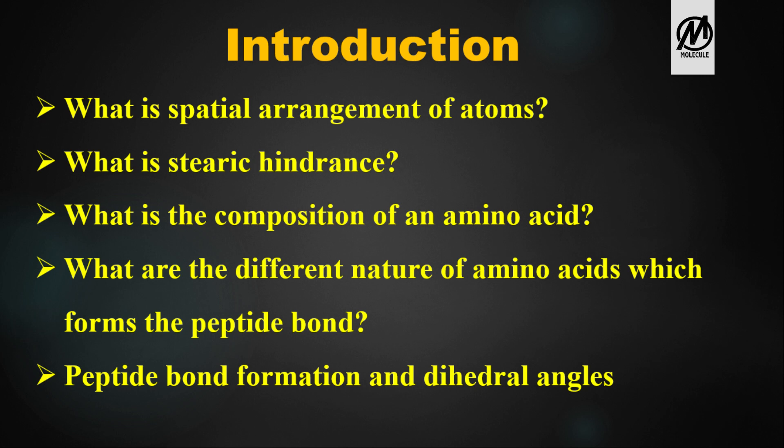Before discussing the Ramachandran plot in detail, we need to know certain concepts: firstly, what is the spatial arrangement of atoms; secondly, what is steric hindrance; thirdly, what is the composition of an amino acid; fourth, what are the different types of amino acids involved in the formation of a peptide bond; and fifth, how is a peptide bond formed and what are the dihedral angles.